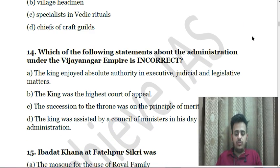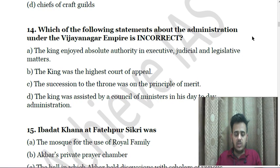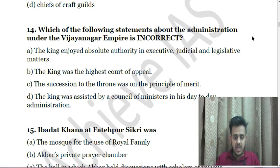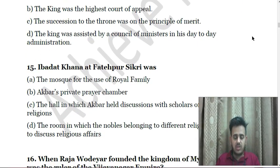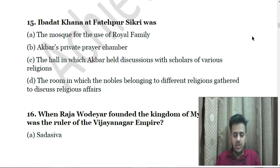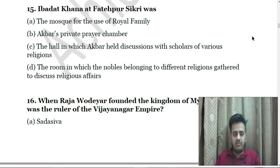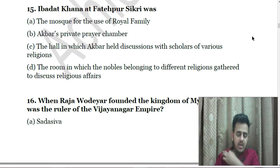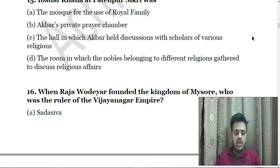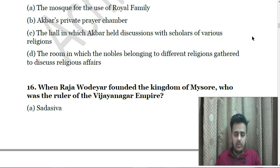Next: Which of the following statements about the administration under the Vijayanagara empire is incorrect? A. The king enjoyed absolute authority in executive, judicial and legislative matters. B. The king was the highest court of appeal. C. The succession to the throne was on the principle of merit. D. The king was assisted by a council of ministers in his day-to-day administration. Fifteenth question: The Ibadat Khana at Fatehpur Sikri was — A. The mosque for use of the royal family, B. Akbar's private prayer chamber, C. The hall in which Akbar held discussions with scholars of various religions, D. The room in which nobles of different religions gathered to discuss religious affairs.